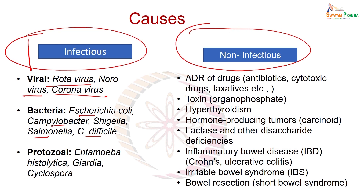Protozoal diarrhea, quite common in India primarily because of poor hygienic conditions, includes amoebic diarrhea due to Entamoeba histolytica, Giardia, or mixed infections where Entamoeba, Giardia, and Cyclospora are all present. These infectious diarrheas — viral, bacterial, or protozoal — are sometimes mixed, with viral, bacterial, and protozoal components all present.